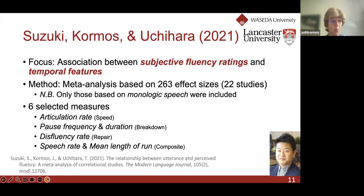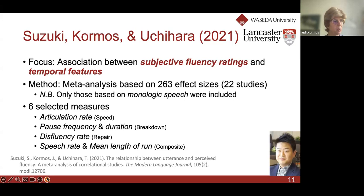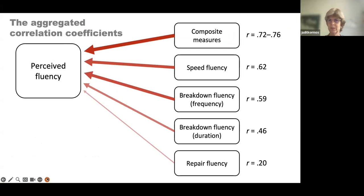One more study to give theoretical background: conducted with Shungo as first author and Uchihara helping with the meta-analysis, we investigated the associations between subjective fluency ratings and temporal features. This was a meta-analysis based on a large number of studies and effect sizes. Only monologic speech was included, and we had six selected measures tapping into different features of fluency. From this point, Shungo will go on and explain what we found — I'll go back and not reveal all the findings yet.